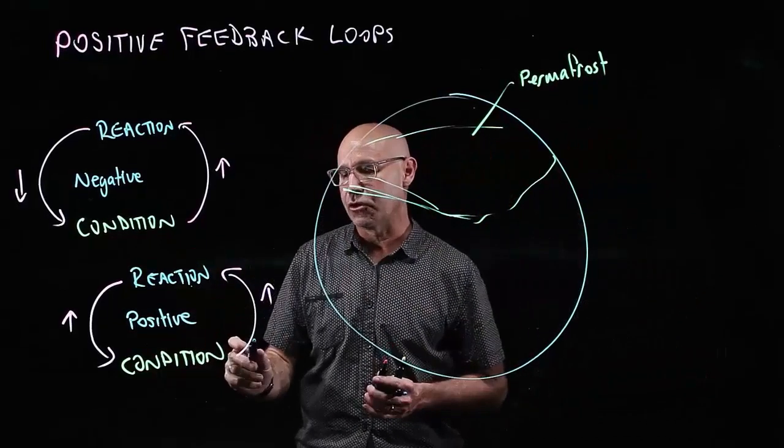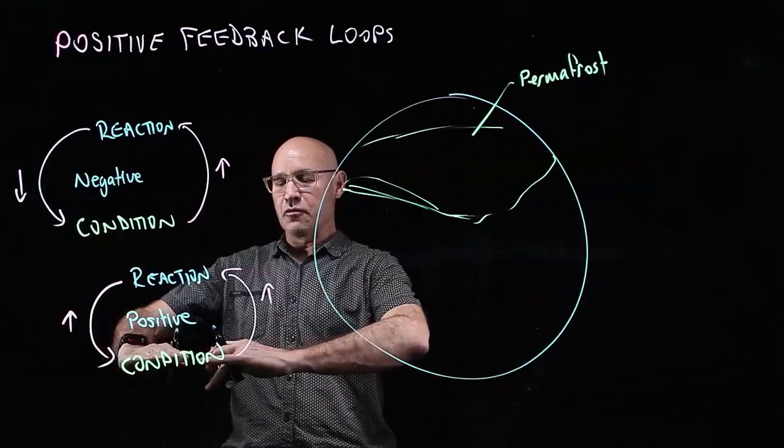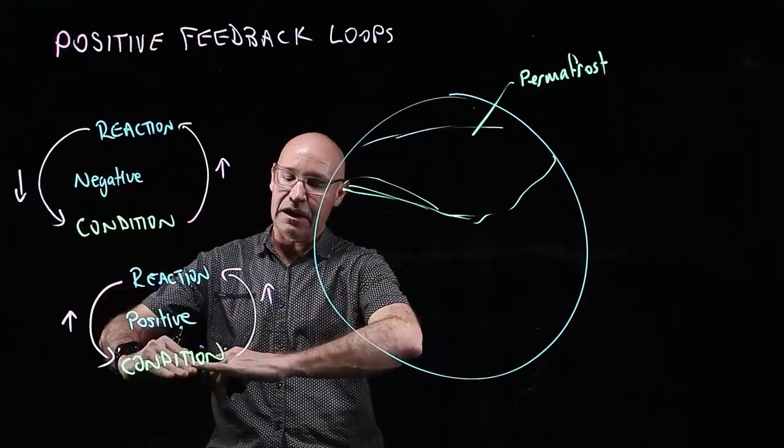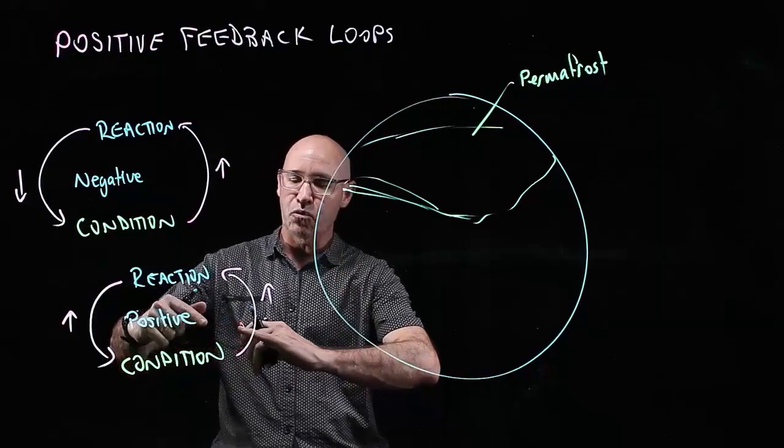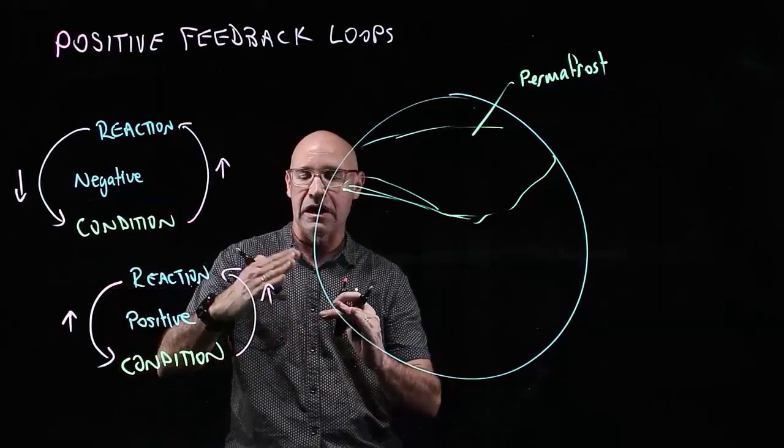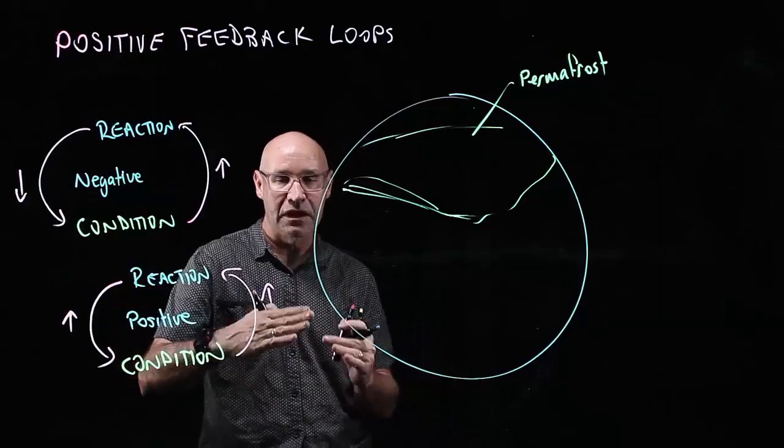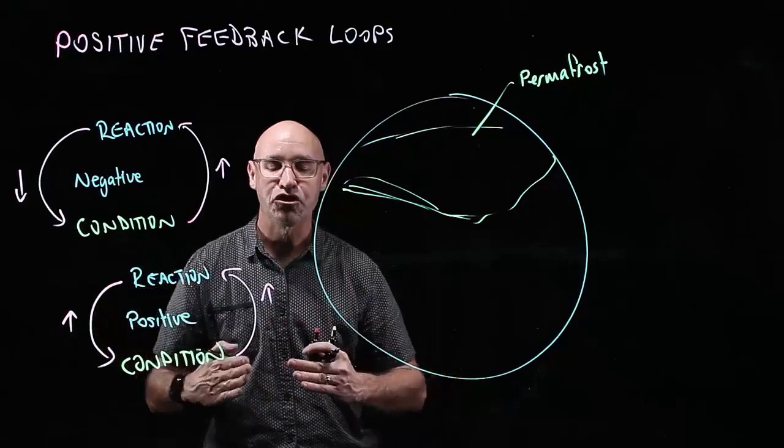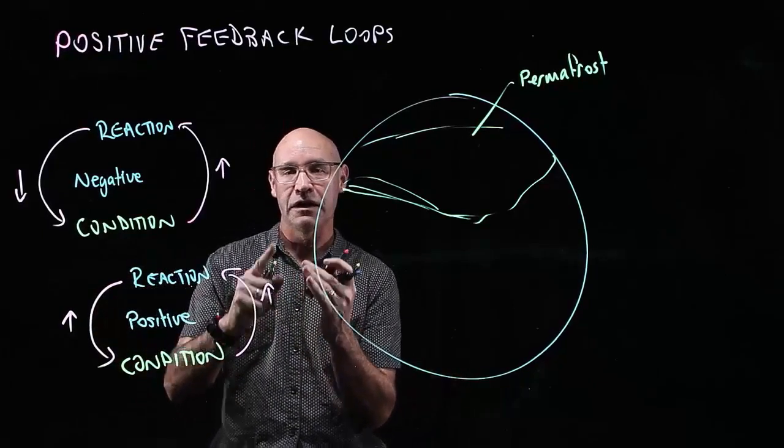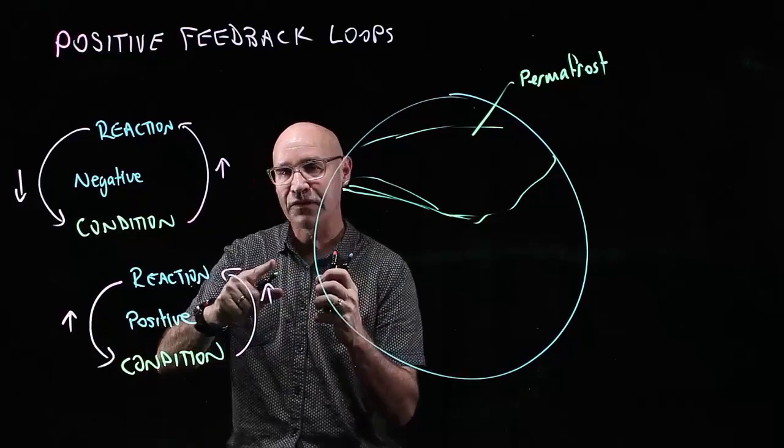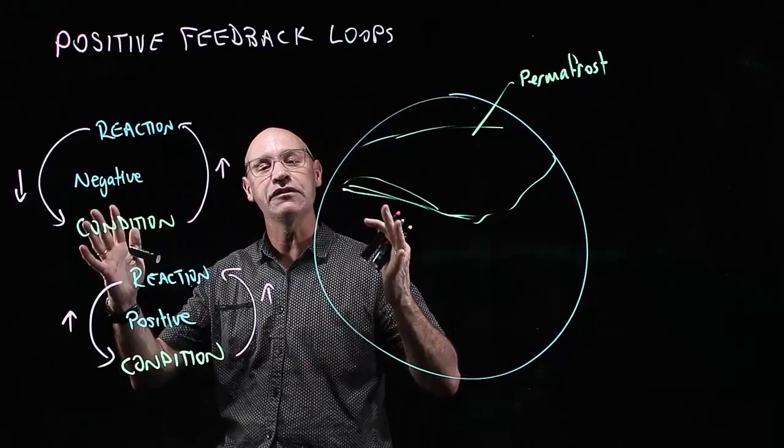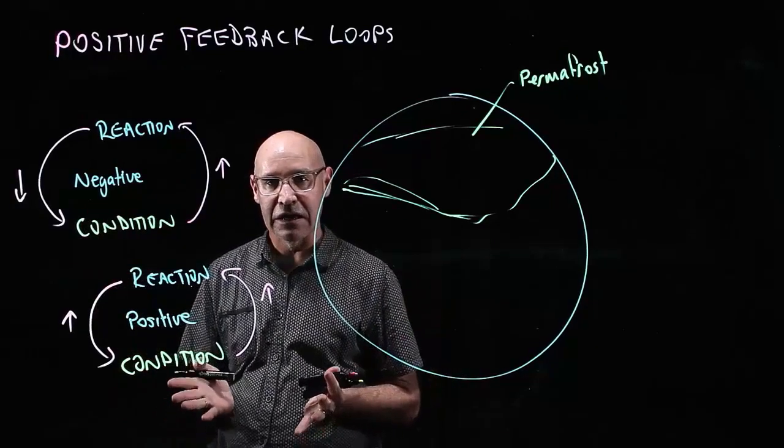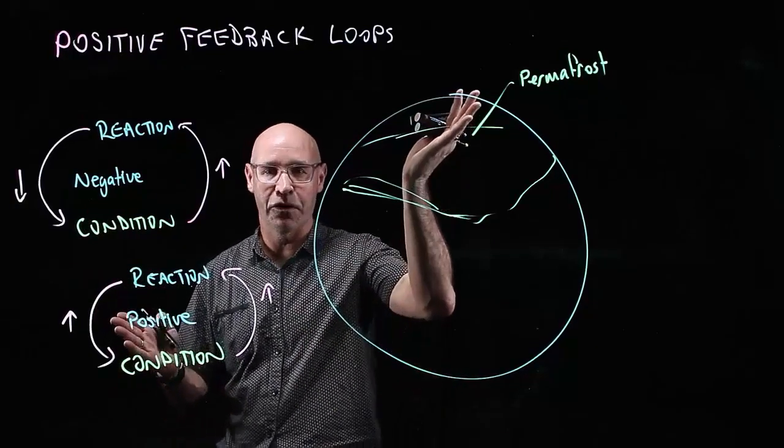So what happens is a positive feedback loop because we've got increasing temperature, we've got the defrosting, we've got the bacteria decomposing, producing more carbon dioxide. That increased carbon dioxide actually increases the temperature so that more of the permafrost melts.